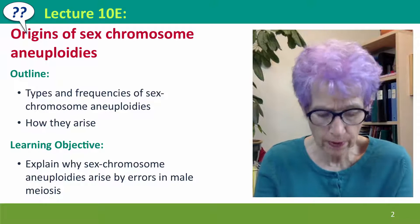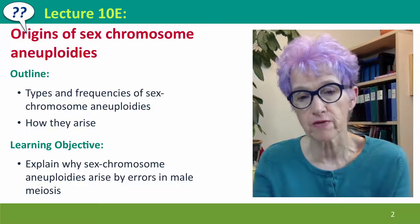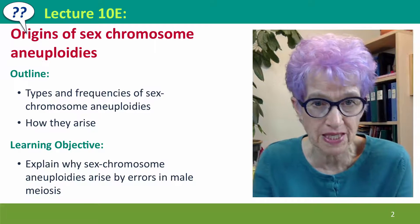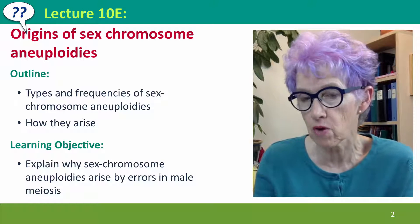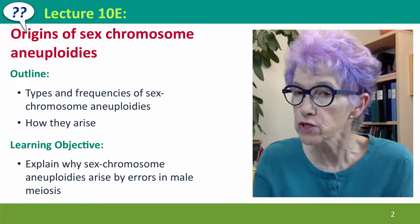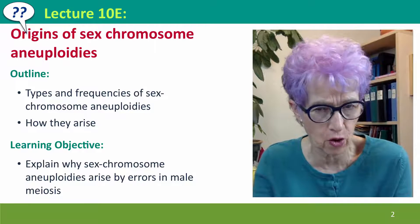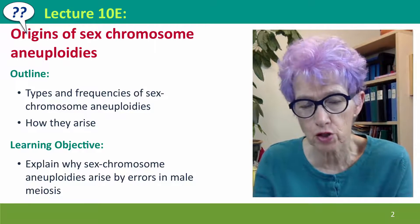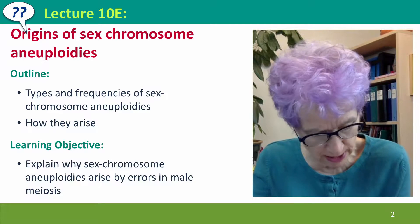We'll talk about the types and frequencies of these sex chromosome aneuploidies, and then we'll talk about how they arise, which is not what you would think based on how autosomal aneuploidies arise.